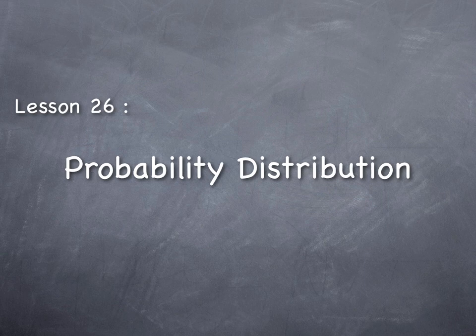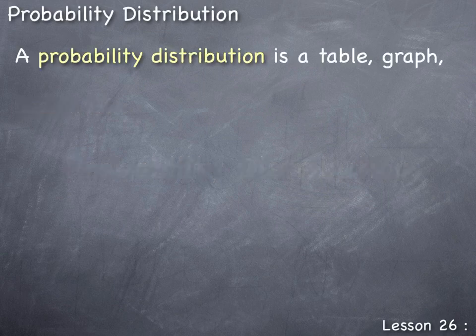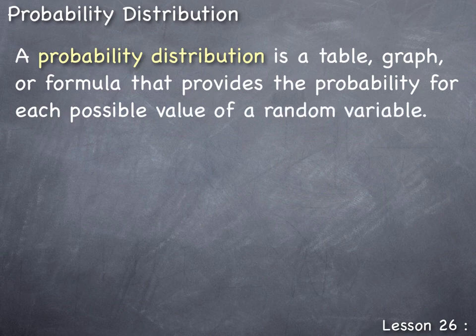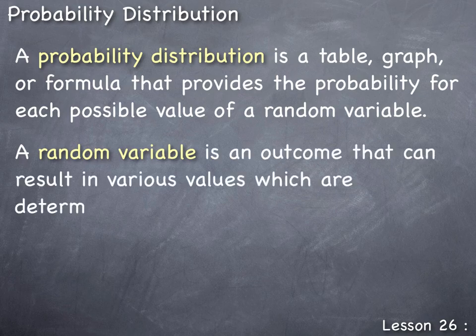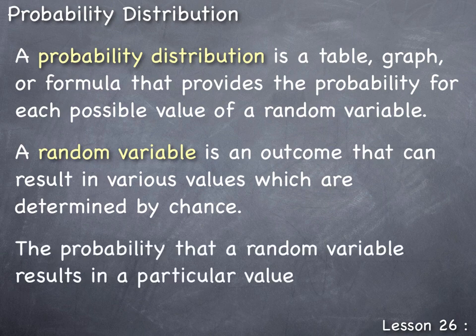Lesson 26: Probability Distribution. A probability distribution is a table, graph, or formula that provides the probability for each possible value of a random variable. A random variable is an outcome that can result in various values which are determined by chance. The probability that a random variable results in a particular value X is noted by the symbol lowercase p sub X.